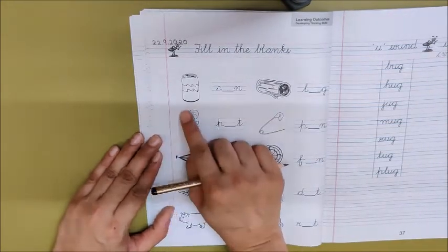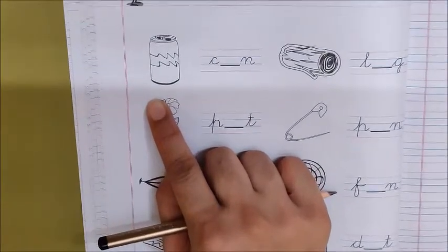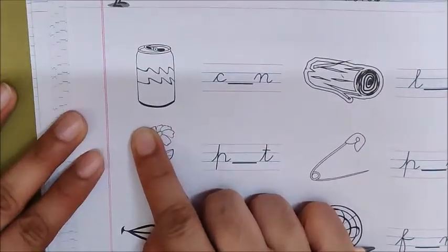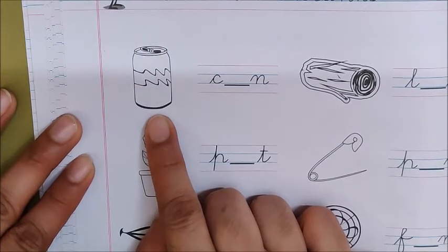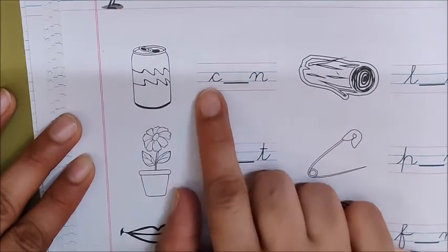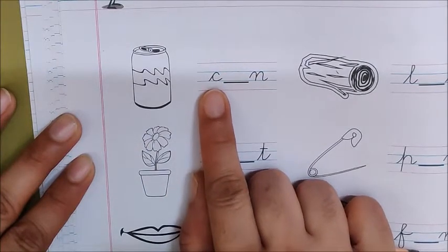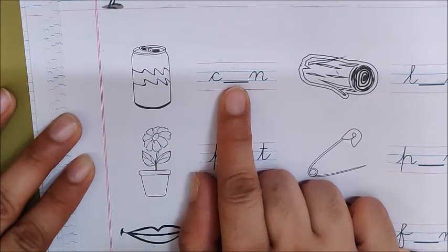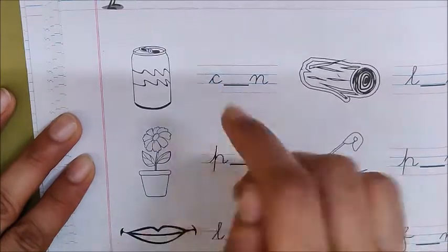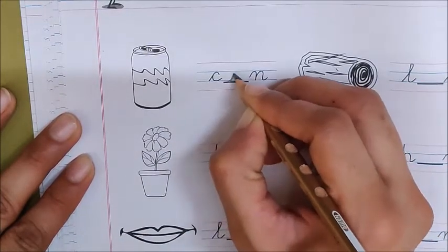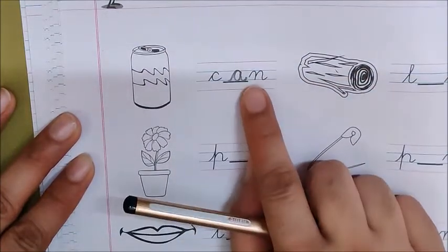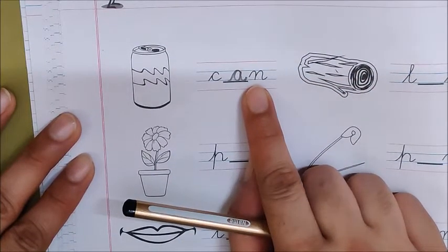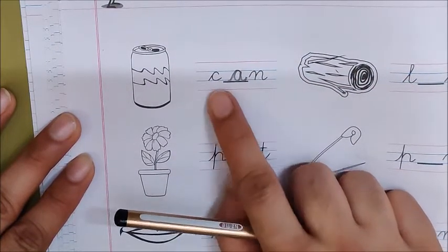Can. Our first picture is, what is this, children? Tell me. I am waiting for your answer. What is this? Correct. It is a can. Can. What is the first sound? K. What is the next sound, children? A. So, write down here. A. N is already there. Can. C-a-n can.